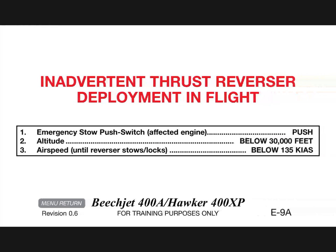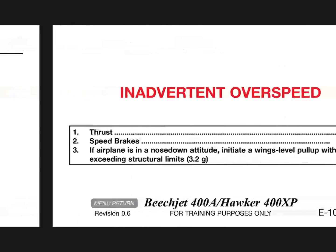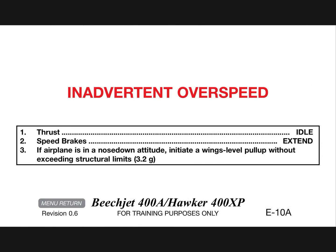Inadvertent thrust reverser deployment in flight: emergency stow push switch affected engine push. Altitude below 30,000 feet, airspeed — until reverser stows or locks, below 135 knots indicated airspeed. Inadvertent overspeed.